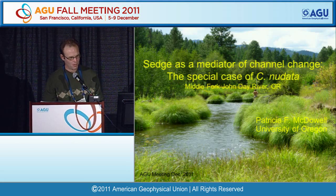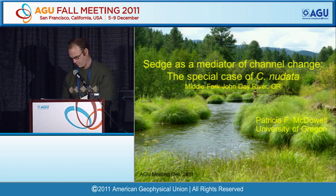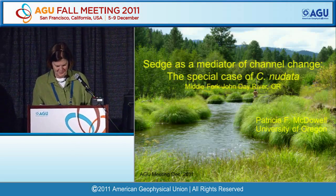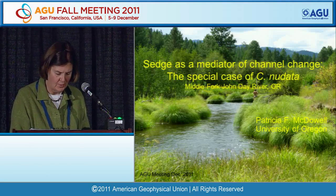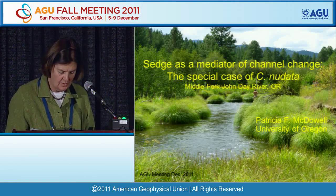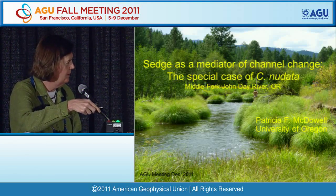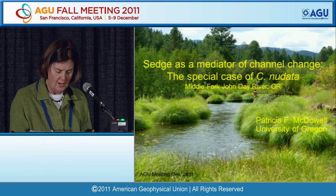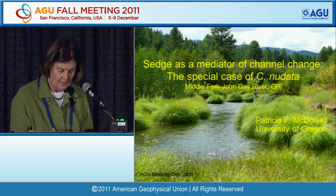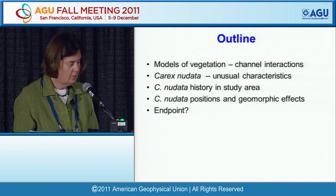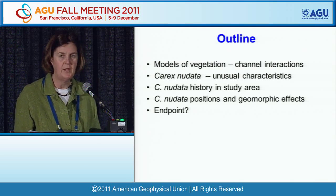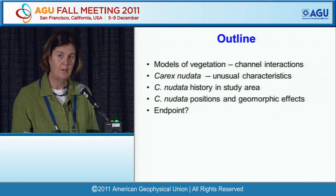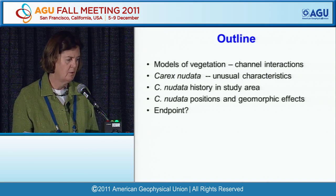The next speaker is Patricia McDowell, whose talk is titled Sedge as a Mediator of Channel Change: The Special Case of Carex Nuttata. She describes an end-member case of vegetation-channel interactions in northeastern Oregon in the Blue Mountains, where Carex Nuttata — a very special plant — is found. This plant has the ability to occupy active channel beds and reshape the active channels in gravel bed rivers. The talk covers models of vegetation-channel interactions, the unusual characteristics of Carex Nuttata, how it has spread in the study area, and its geomorphic effects.